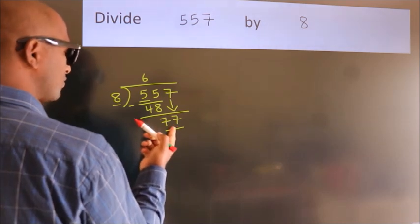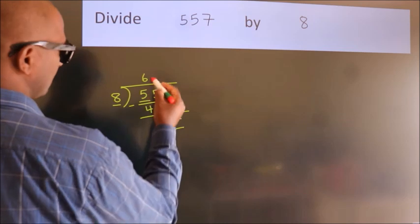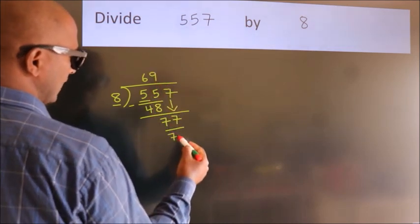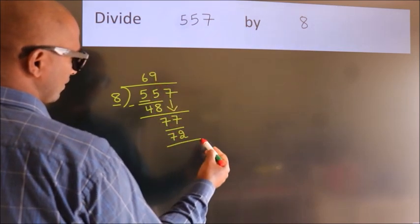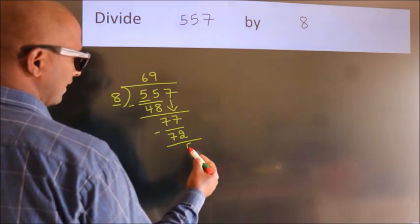A number close to 77 in the 8 table is 8 times 9 equals 72. Now we subtract. We get 5.